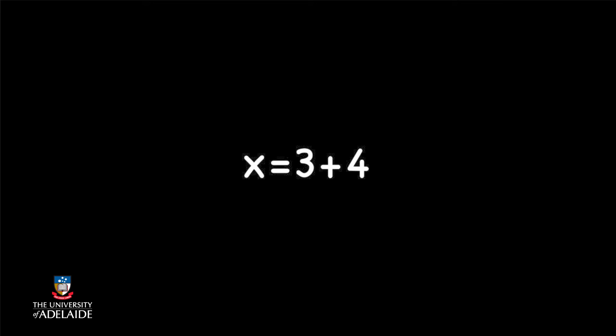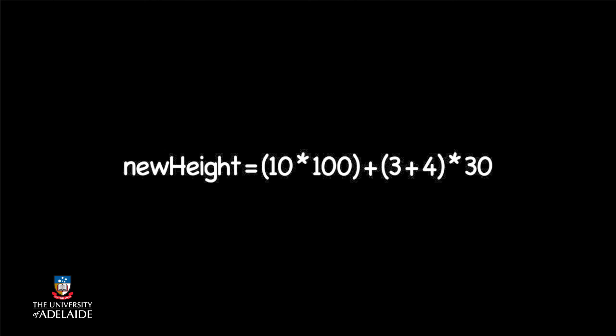This calculates the result of the expression 3 plus 4 and then assigns that value — in this case 7 — to be the new value of the variable x. Expressions can be quite complicated though, and we often use brackets to help us organise and make sense of more complicated expressions. The following example shows you how we do this. Can you work out what the value of the variable new height would be?